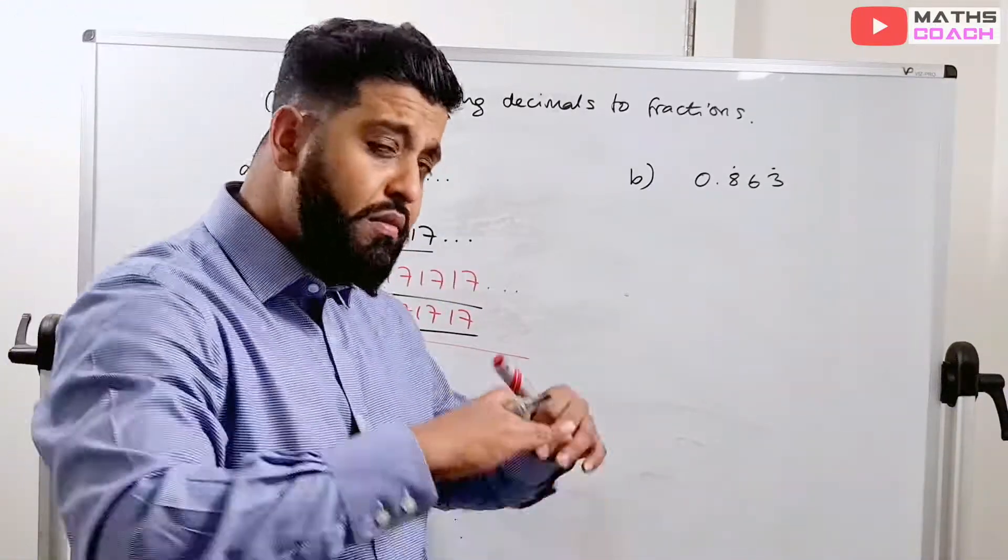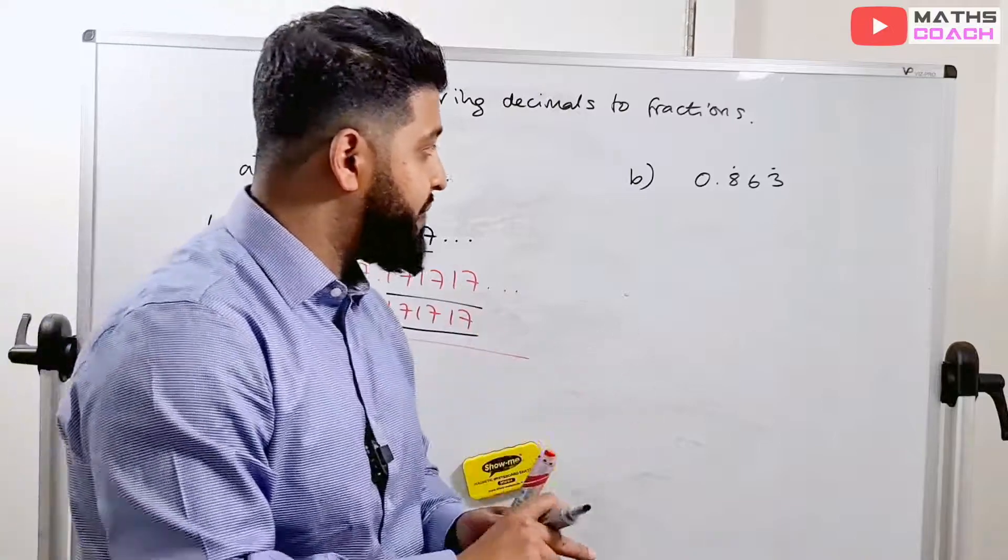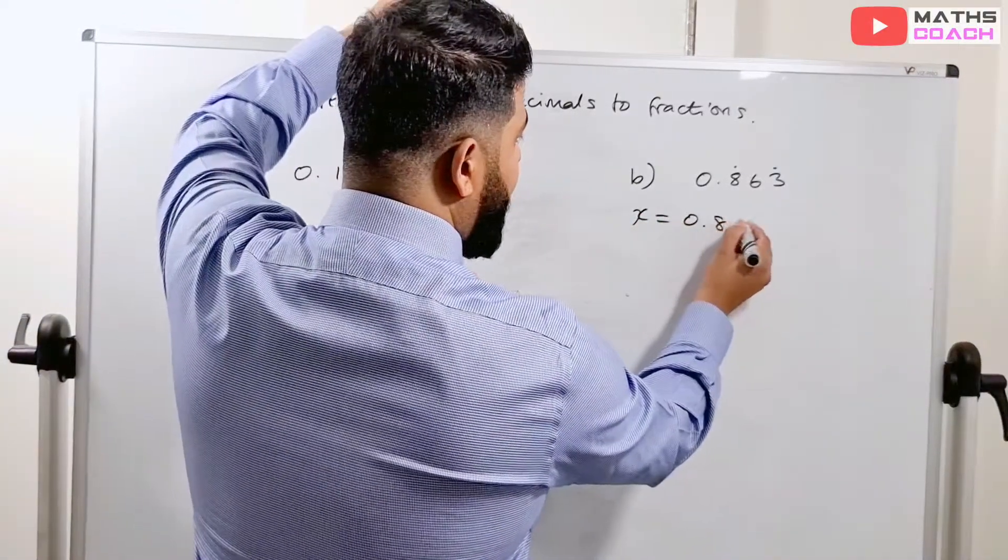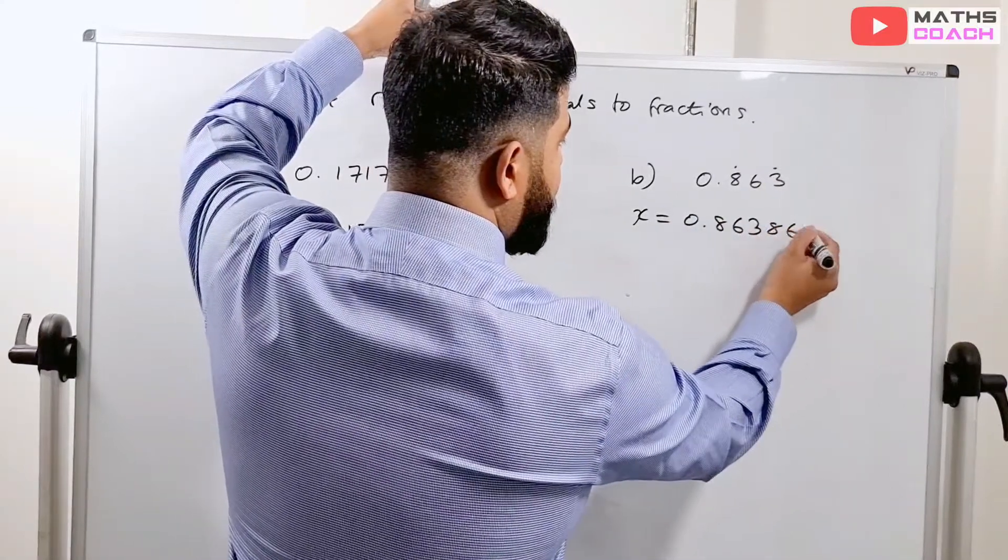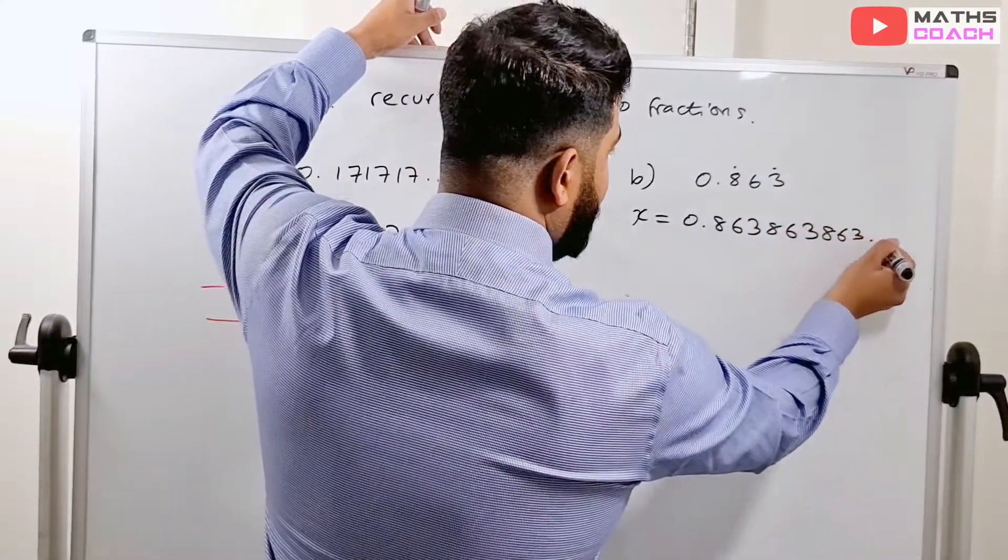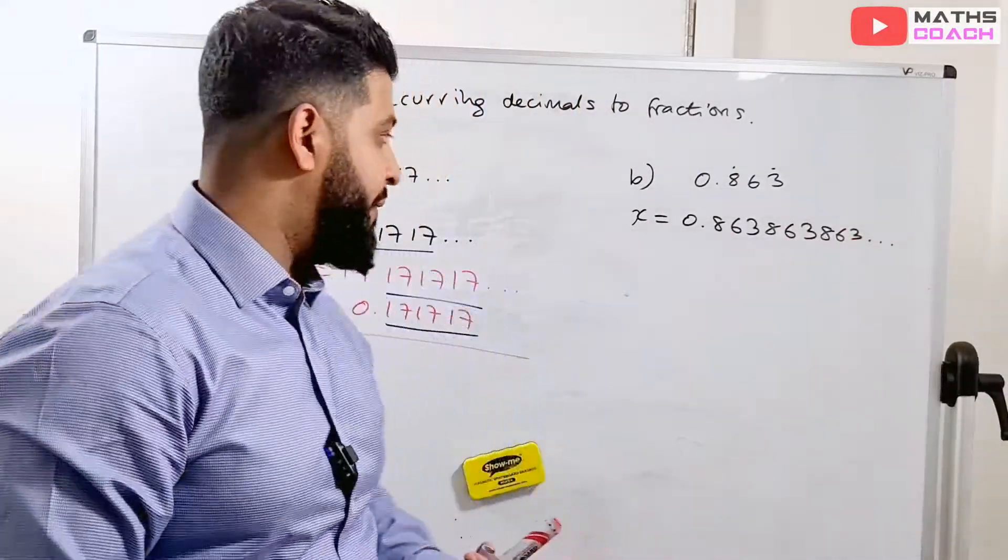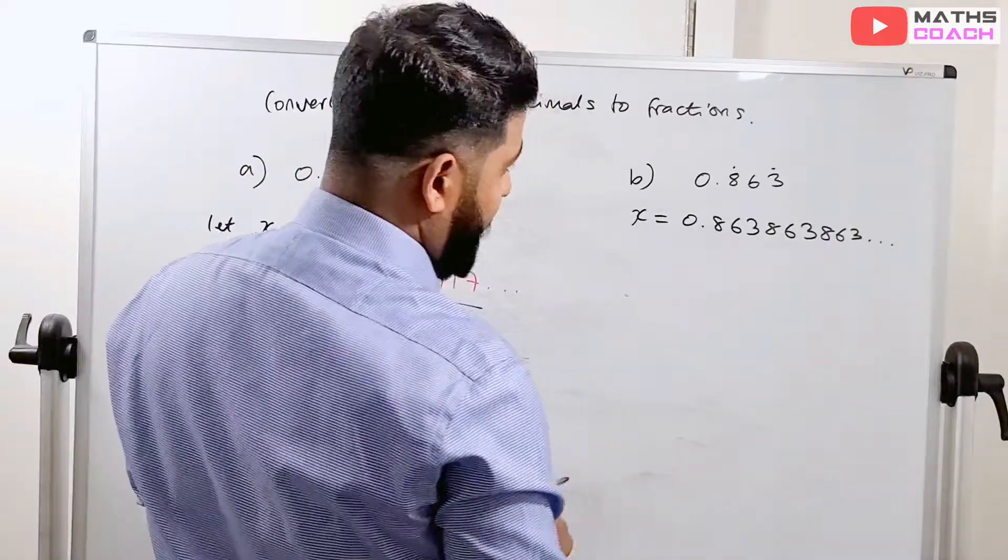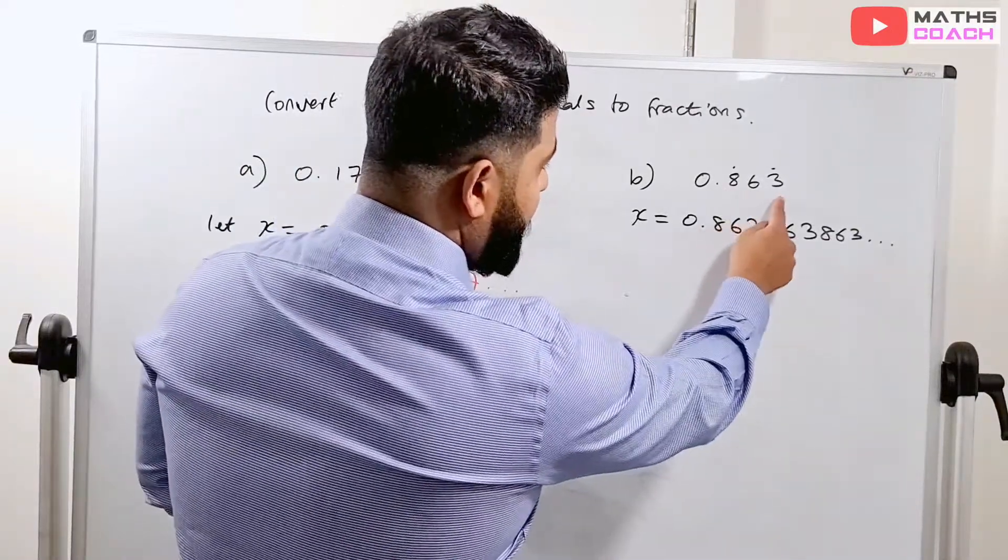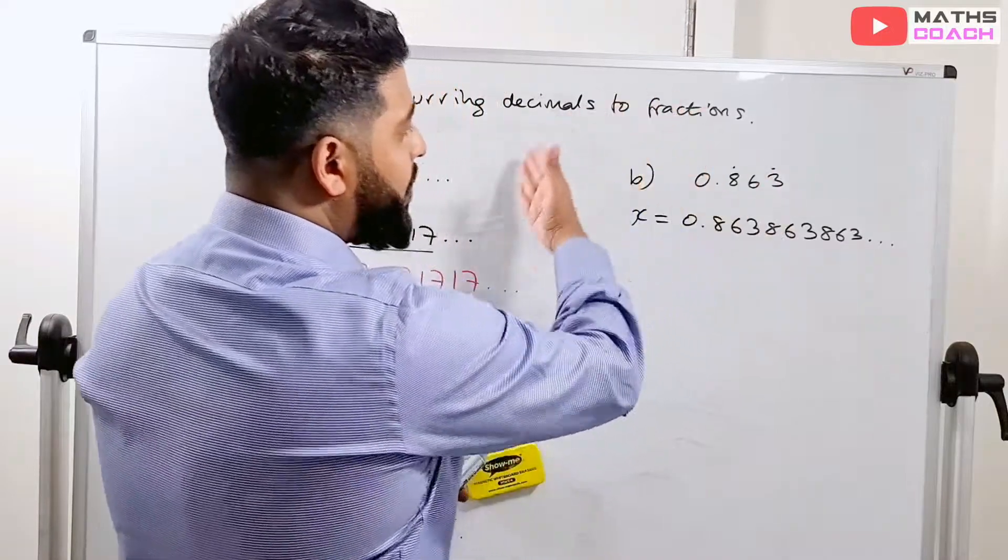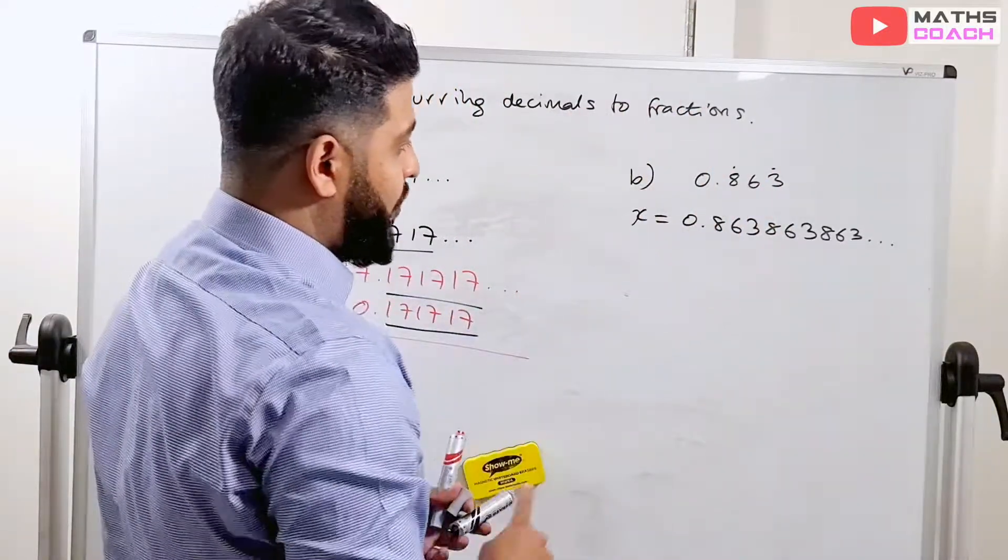Let's have a look at this one here. Exactly the same thing. We'll follow the same system. So we'll write x is equal to 0.86386386. And you can write this as many times as you want. But that's enough to indicate that this continues on forever. This time, however, we've got three numbers which are repeating.